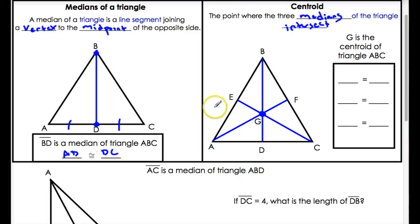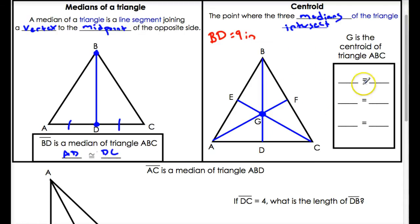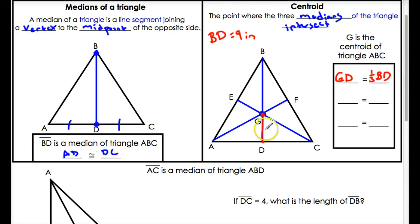Now here are the three facts I need you to take down. Let's pretend that BD — this whole median — equals nine. The first thing to know is the smaller segment, the part that goes from the centroid to the side of the triangle, is one third the total median. So GD equals one third of BD. If the whole thing is nine, GD is going to be one third of that, which is just three.